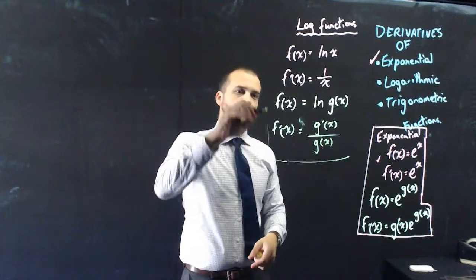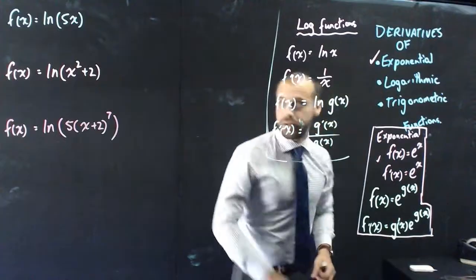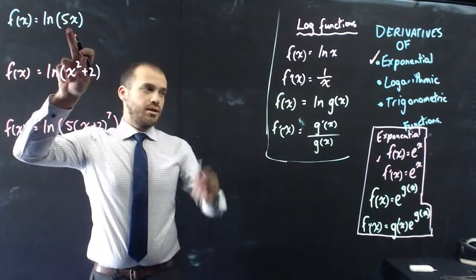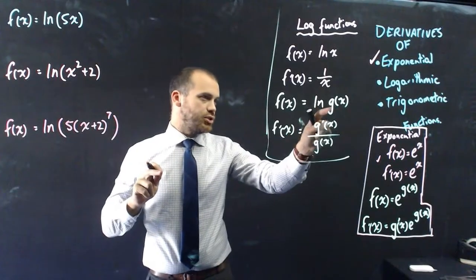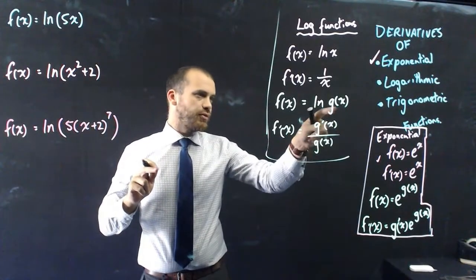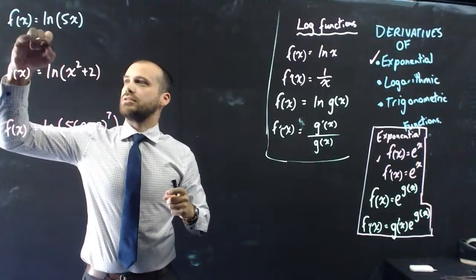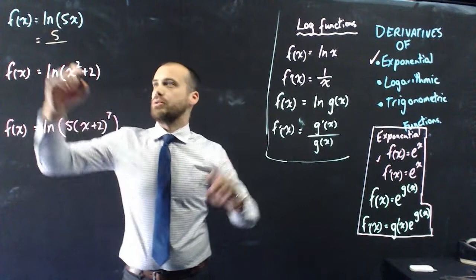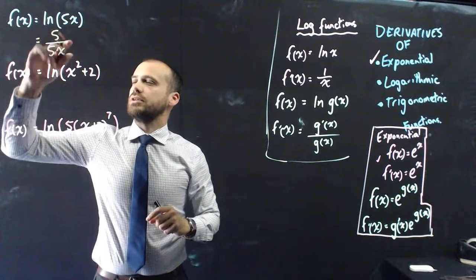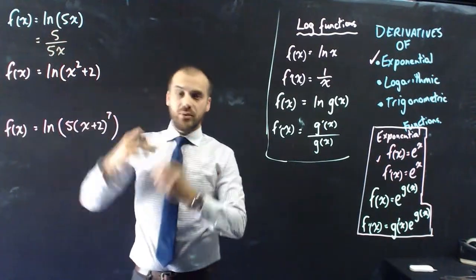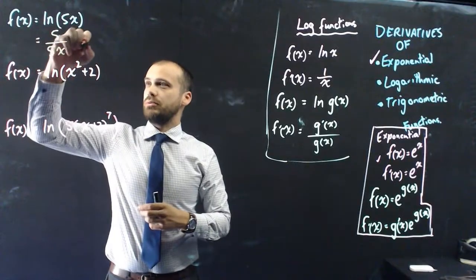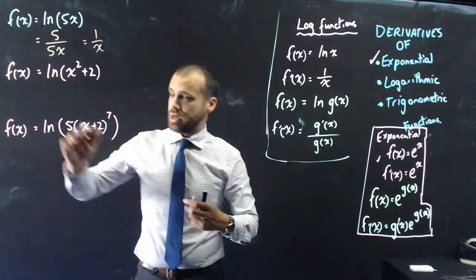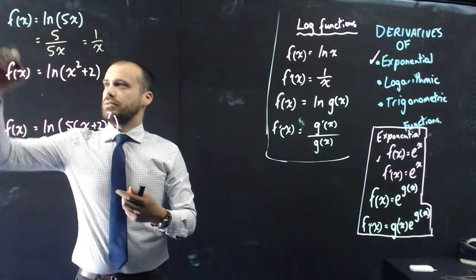Let's engage with that rule with some examples. If f of x equals ln 5x, the rule says ln g of x, so we need the derivative of the inside, which is 5, over the original thing, which is 5x. So 5 over 5x, and we can simplify that to get 1 over x. That's the derivative.